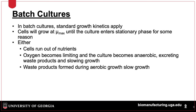We will assume that the culture has grown aerobically for the remainder of this presentation, as this is the most common way to grow cells. Under batch conditions, cells will grow at mu max until entering stationary phase. This occurs because either nutrients run out, or oxygen becomes limiting, forcing strict aerobes to die or facultative anaerobes like E. coli into anaerobic growth, where cells start generating acid and other waste products which slow growth.